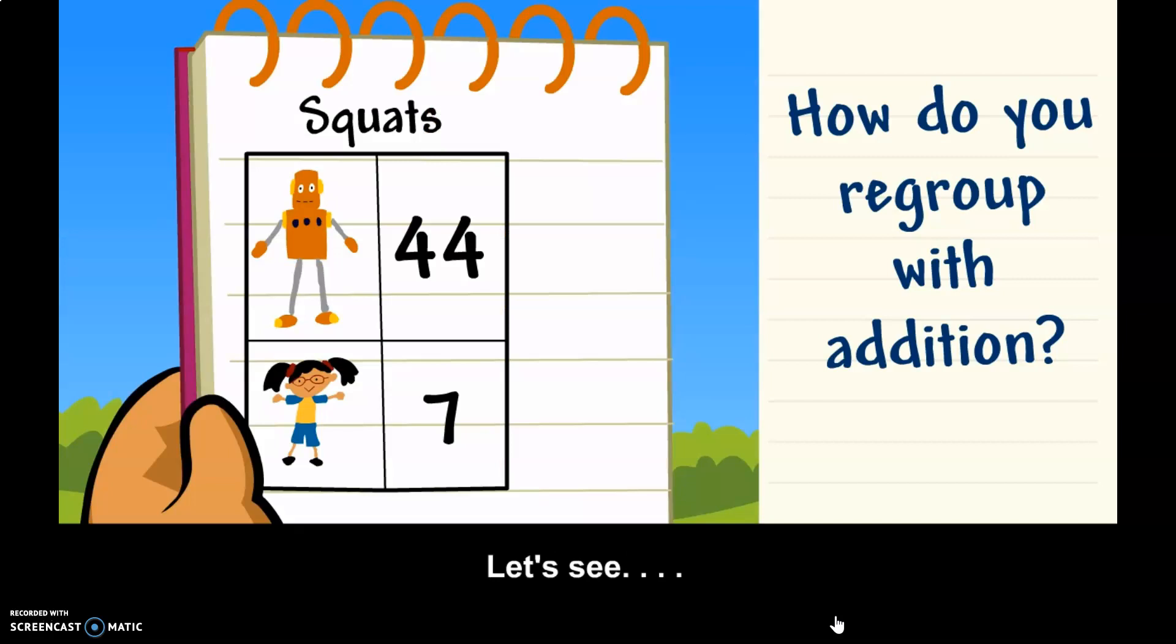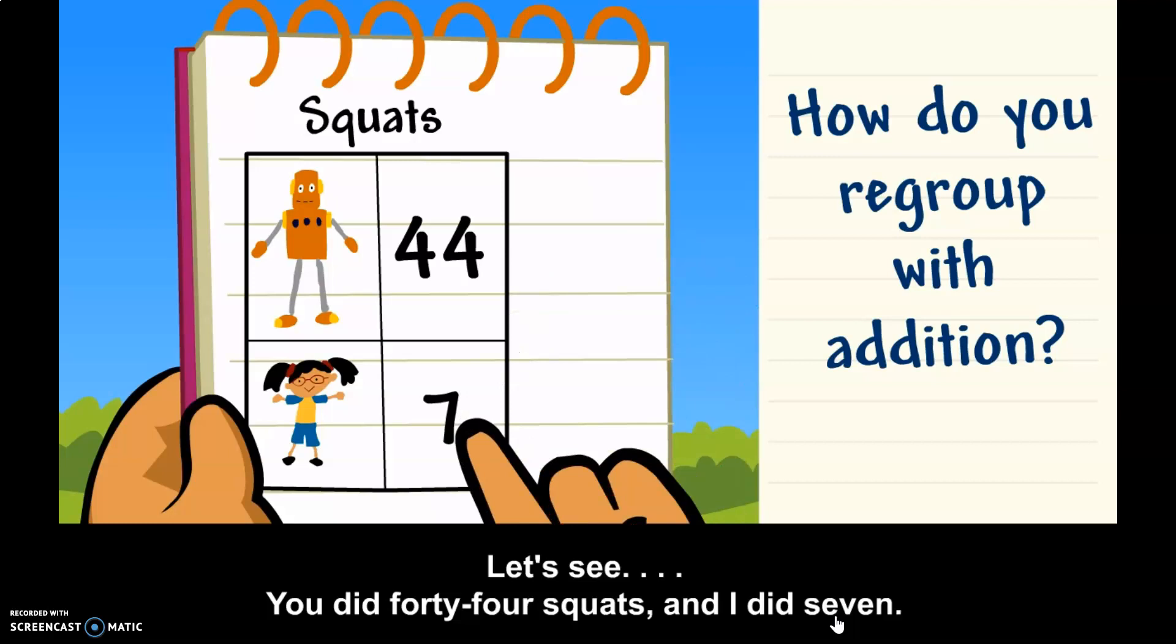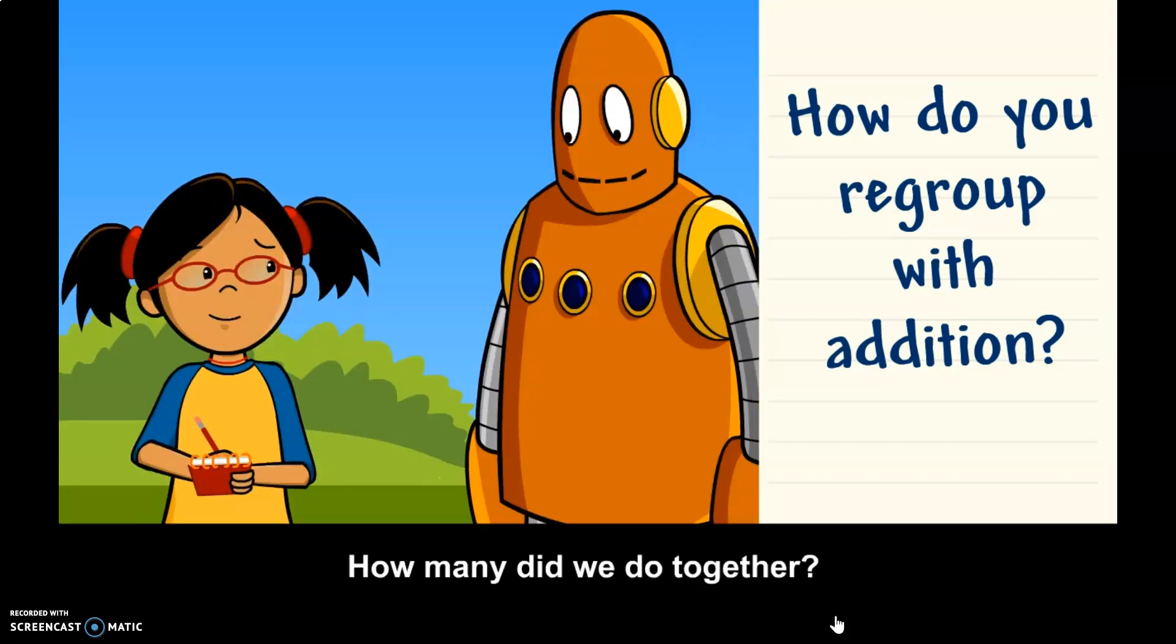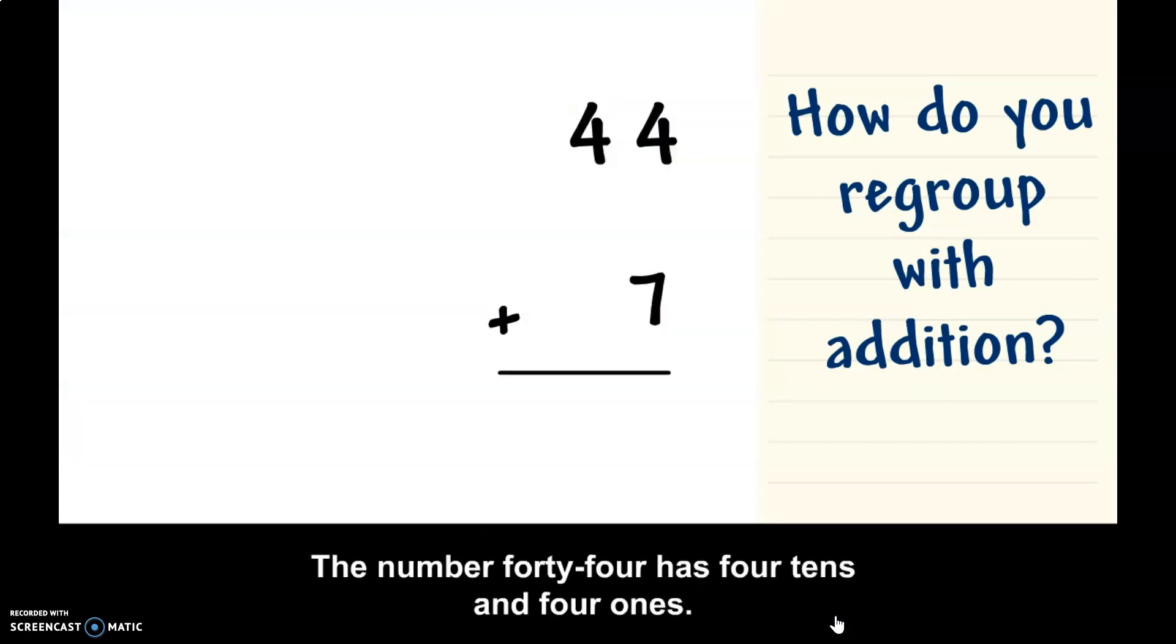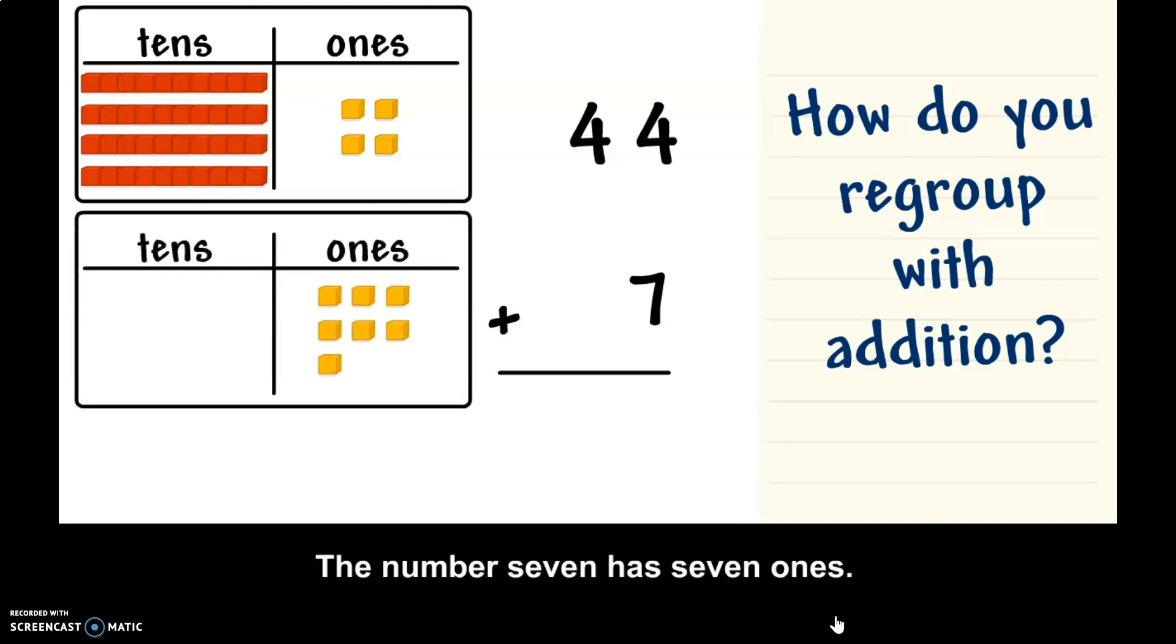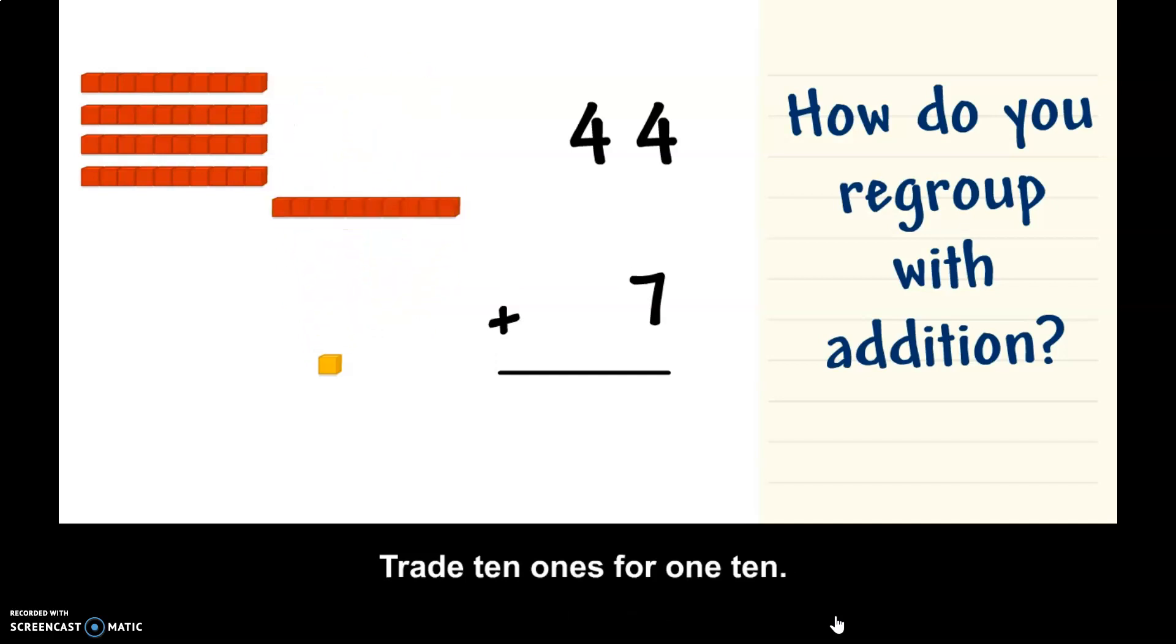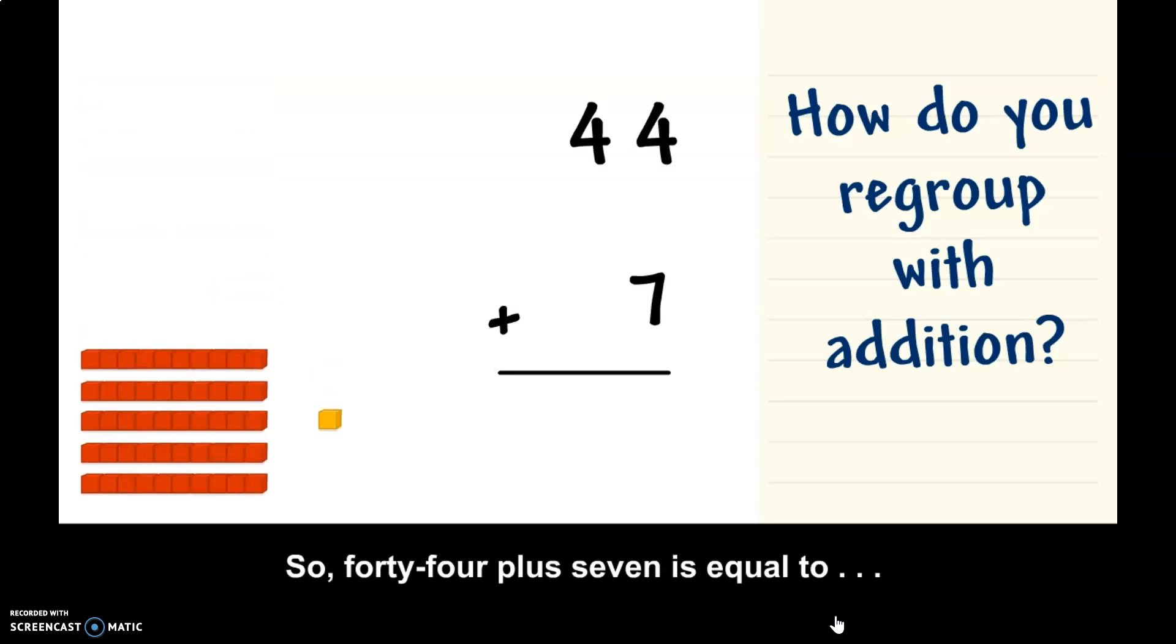Let's see. He had 44 squats, and I did 7. How many did we do together? The number 44 has four tens and four ones. The number 7 has seven ones. To add 44 and 7, regroup the ones. Trade 10 ones for one ten. So, 44 plus 7 is equal to 51.